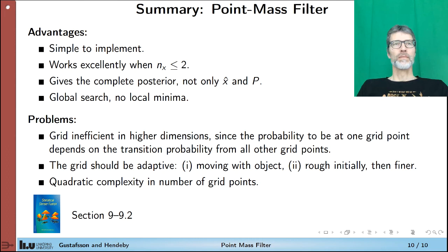To sum up, the point mass filter has a few advantages. It's simple to implement. It works excellently for small state spaces, preferably less than two. It gives the complete posterior, not only an estimate and covariance, compared to the extended Kalman filter for the same problem. And it's a global search on the defined grid. So we don't get stuck in a local minima, as was the risk for non-linear least squares.